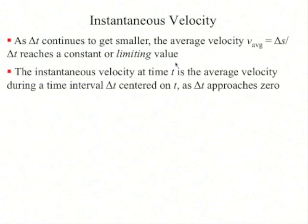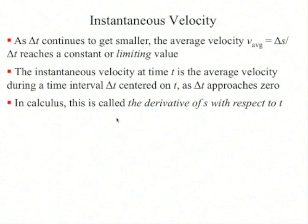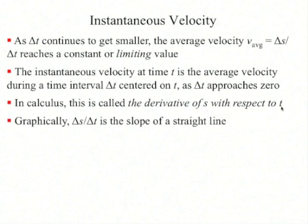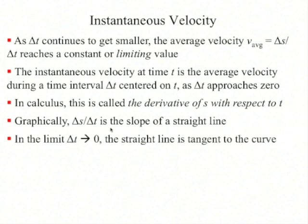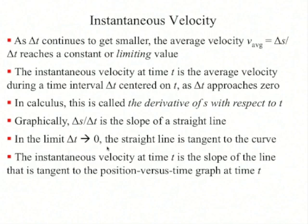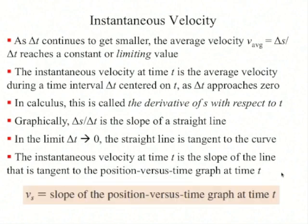As delta t gets smaller and smaller, the average velocity reaches a constant or limiting value. This interval delta t is centered on t, and delta t approaches zero. In calculus, this is called the derivative of s with respect to t. Graphically, delta s over delta t is the slope of a straight line. In the limit as delta t approaches zero, the instantaneous velocity is the slope of the line that is tangent to the position versus time graph at time t.